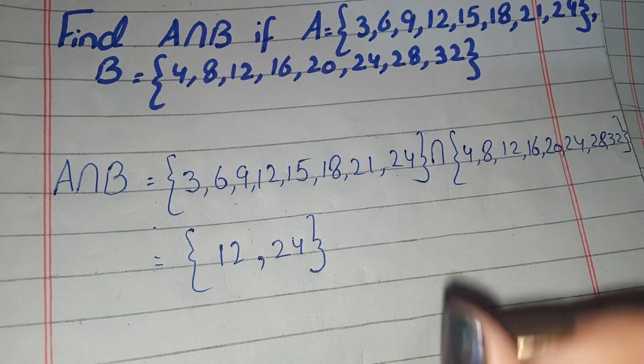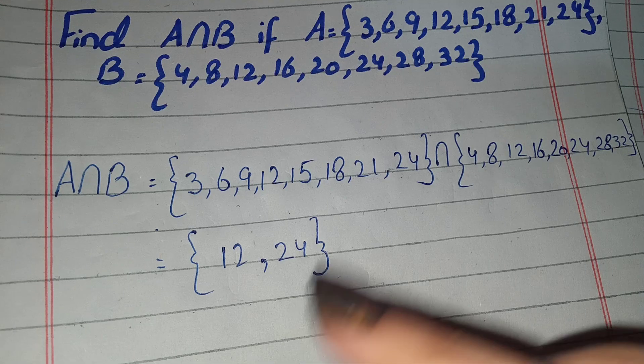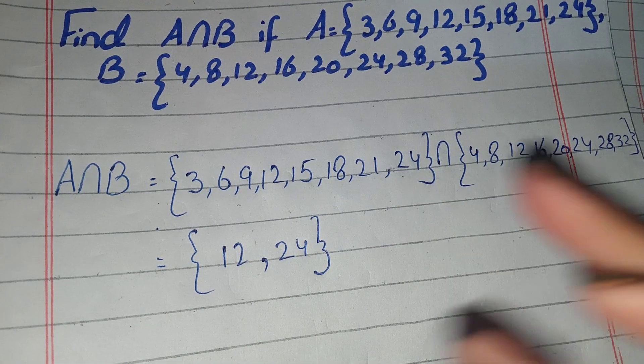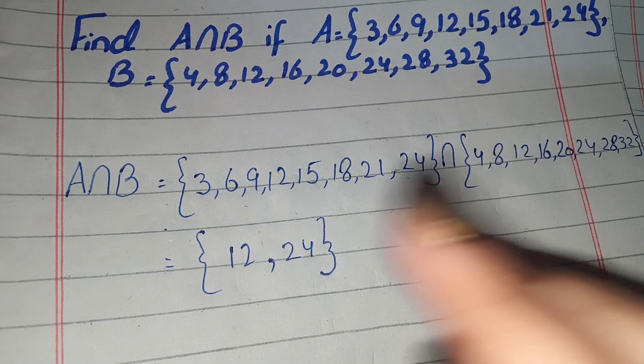So these are just two numbers which are common: 12 is in both sets and 24 is also in both sets. So we have found the intersection of the two sets.